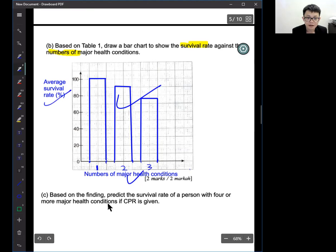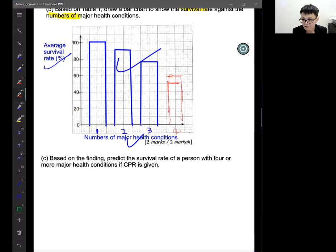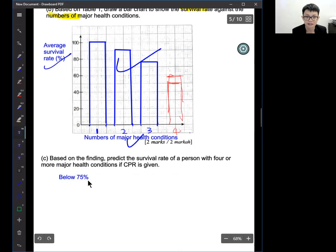Based on the finding, predict the survival rate with four or more major health condition if CPR is given. This is three. He asked us to predict probably four be around here, correct? If I put four around here, it will be lesser, around here. It will be lesser around here. Or maybe here. Around here, right? Like a staircase. I would say that the condition will be below 75 percent. You just need to write down the answer. Below 75 percent.